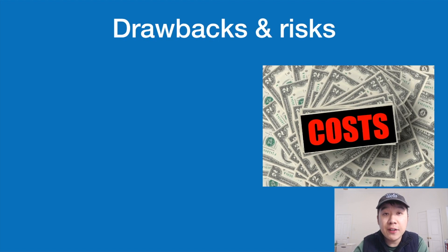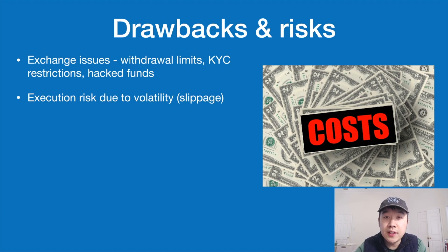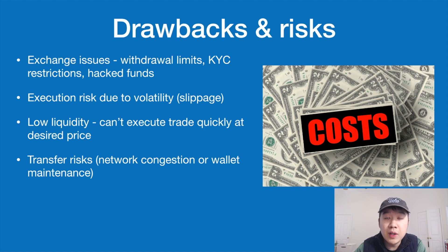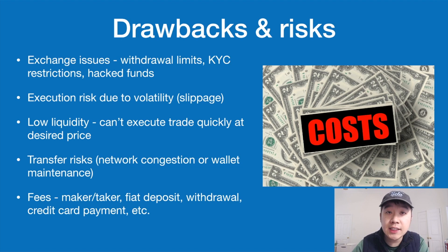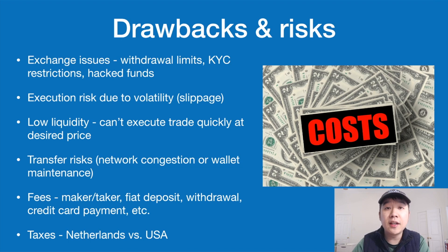There are many drawbacks and risks to consider. Exchange risks include withdrawal limits, KYC restrictions, and hacked funds if you keep money on exchanges. Execution risks arise from volatility — an order may not fill if the price moves too fast. Low liquidity means you can't execute trades quickly at your desired price. Transfer risks include network congestion or wallet maintenance, which is critical if your strategy requires transferring coins between exchanges. Fees are huge and must be factored into profitability calculations — maker/taker fees, deposit fees, withdrawal fees, and credit card fees. Finally, taxes differ across the world; in the US you pay taxes on every transaction, while in the Netherlands you don't.